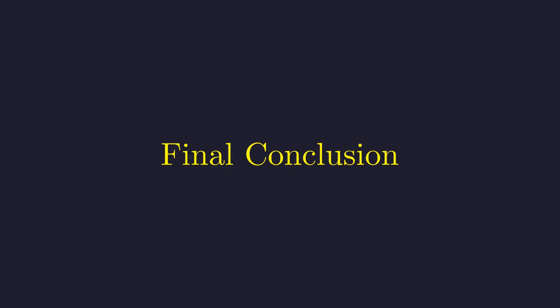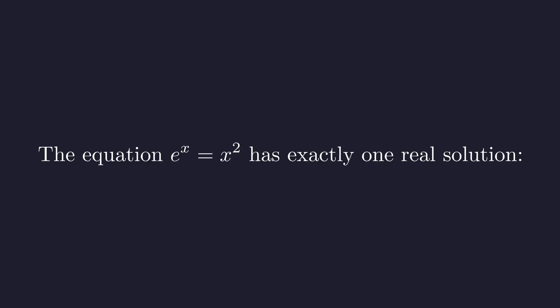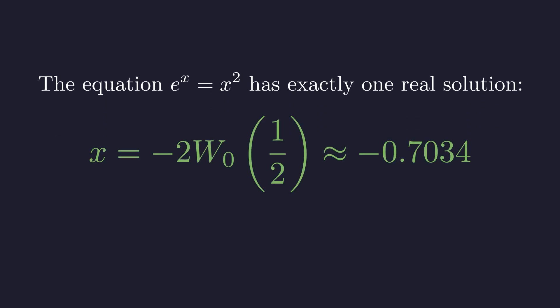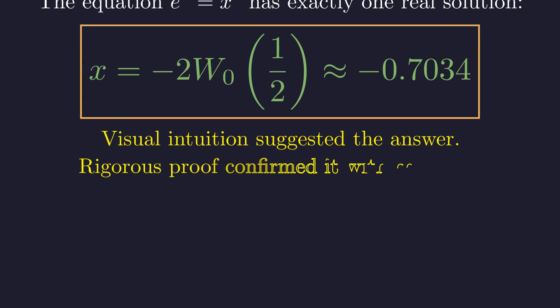So let's wrap this up. We've proven with complete rigor that e to the x equals x squared has exactly one real solution. x equals negative 2 times W sub 0 of 1 half, which numerically is about negative 0.7034. The graph gave us a hint about where to look, but it was the rigorous proof that turned that hint into certainty.